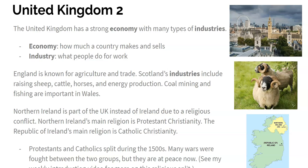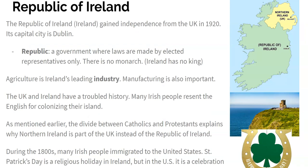The Republic of Ireland gained independence from the United Kingdom in 1920. It used to be a part of the UK also, but eventually got its independence just like we did. Its capital is the city of Dublin, on the eastern coast of Ireland. It is a republic, which is different from a constitutional monarchy — the laws are made by elected representatives only and there is no monarch. Ireland does not have a king, unlike the UK which still has their monarch and parliament. That's also what we have in the United States — a republic.